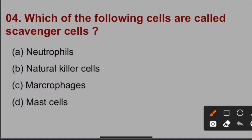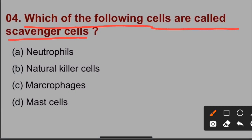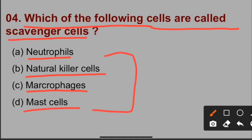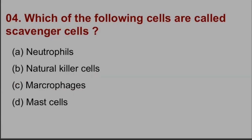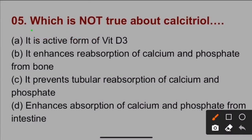Question number four: Which of the following cells are called scavenger cells? Options include neutrophils, natural killer cells, macrophages, and mast cells. All four are phagocytic cells, but among them macrophages are called scavenger cells. So option C is the correct answer.